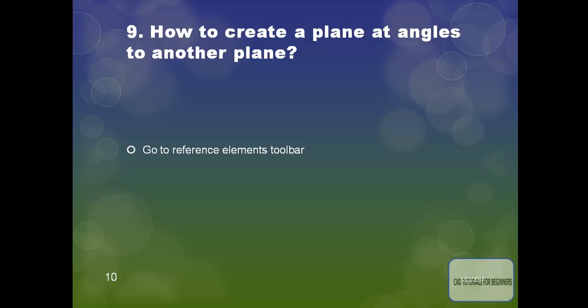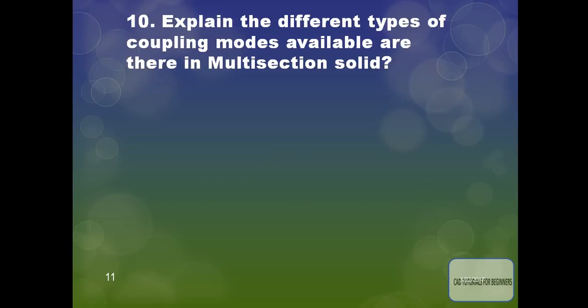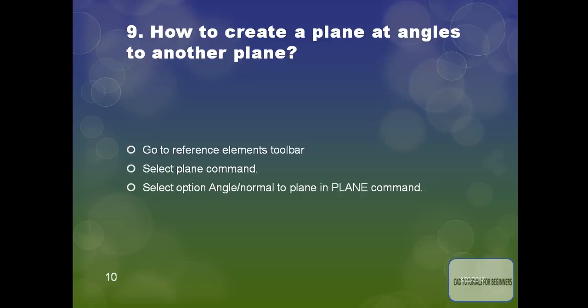How to create a plane at angles to another plane? Go to the Reference Element toolbar, select the plane command, then select the angle or normal to plane option, lock it, and then with reference to another plane or face you can create a plane at an angle to another plane.